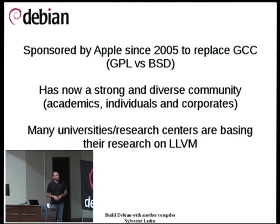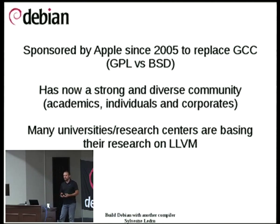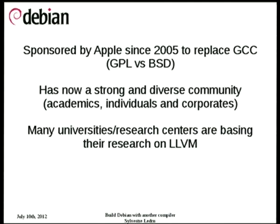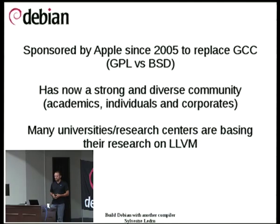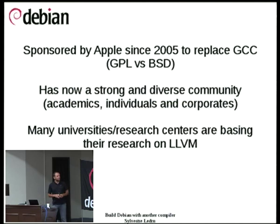It now has a very strong community. Many academics are doing their research on LLVM, mostly because GCC is pretty hard to hack into — not because GCC is not good, but mainly because GCC is old software with a lot of legacy code. It is way easier for new students to get into LLVM because it is more modern code. There are also many individuals and corporations involved, including Google investing a lot, ARM, MIPS, NVIDIA, and others.